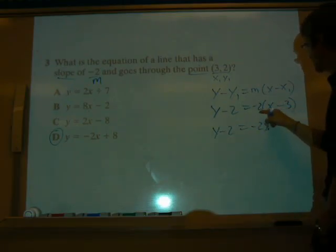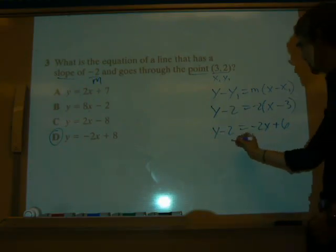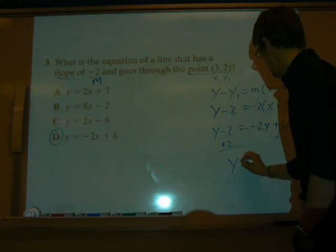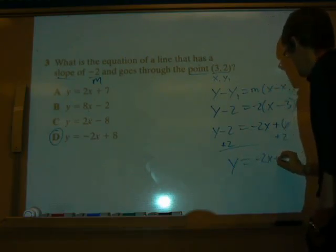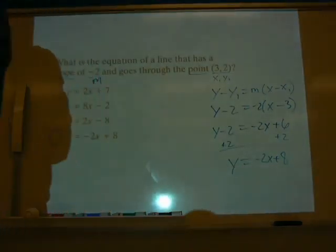Distribute this negative 2. That's going to give me negative 2x. Negative 2 times negative 3, positive 6. Then how do we bring this negative 2 over? What should we do? Add 2. Yep, add 2 to both sides. Final answer, y equals negative 2x plus 8. So this confirms that our answer choice was indeed D.